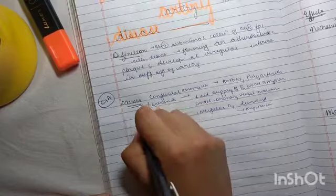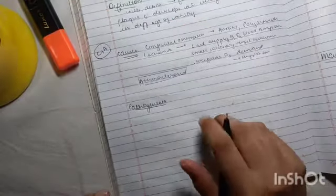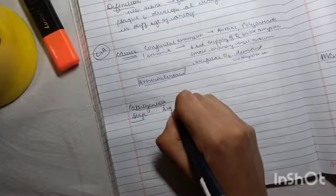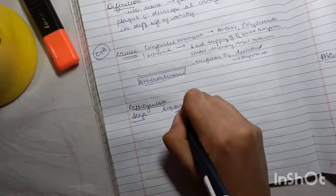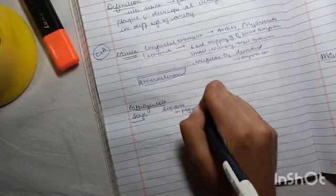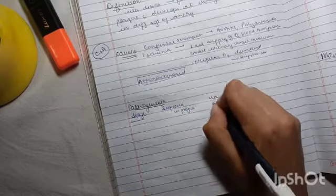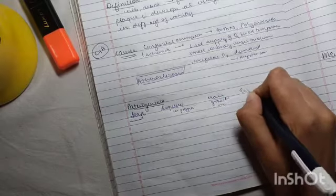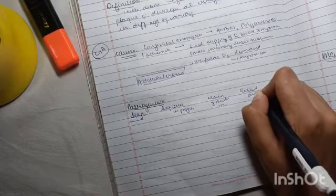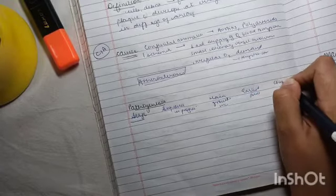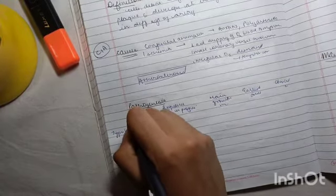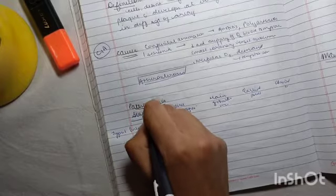For pathogenesis, we'll discuss it in stages with sequence, progression, main growth mechanism, earliest onset, and clinical correlation. Type 1 is the initial stage with isolated macrophage foam cells.